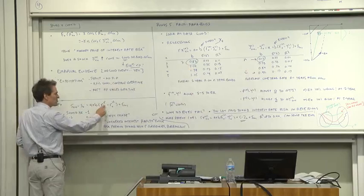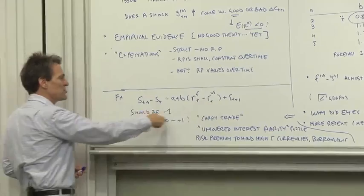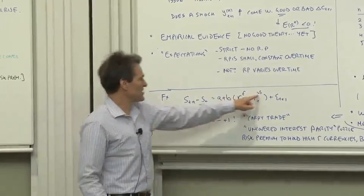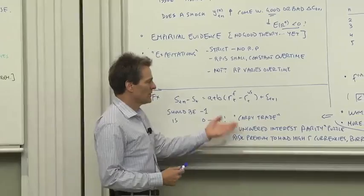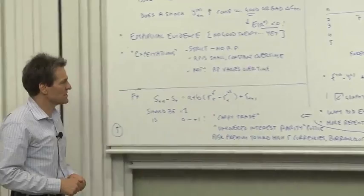It shows up in foreign exchange. High foreign interest rates relative to U.S. interest rates do not forecast a depreciation. The number should be minus one; the number is in fact closer to plus one. High foreign interest rates forecast a rate of return. That's called the carry trade or the uncovered interest parity puzzle. You get paid to hold a risk premium to hold high interest rate currency and borrow from low interest rate currencies.